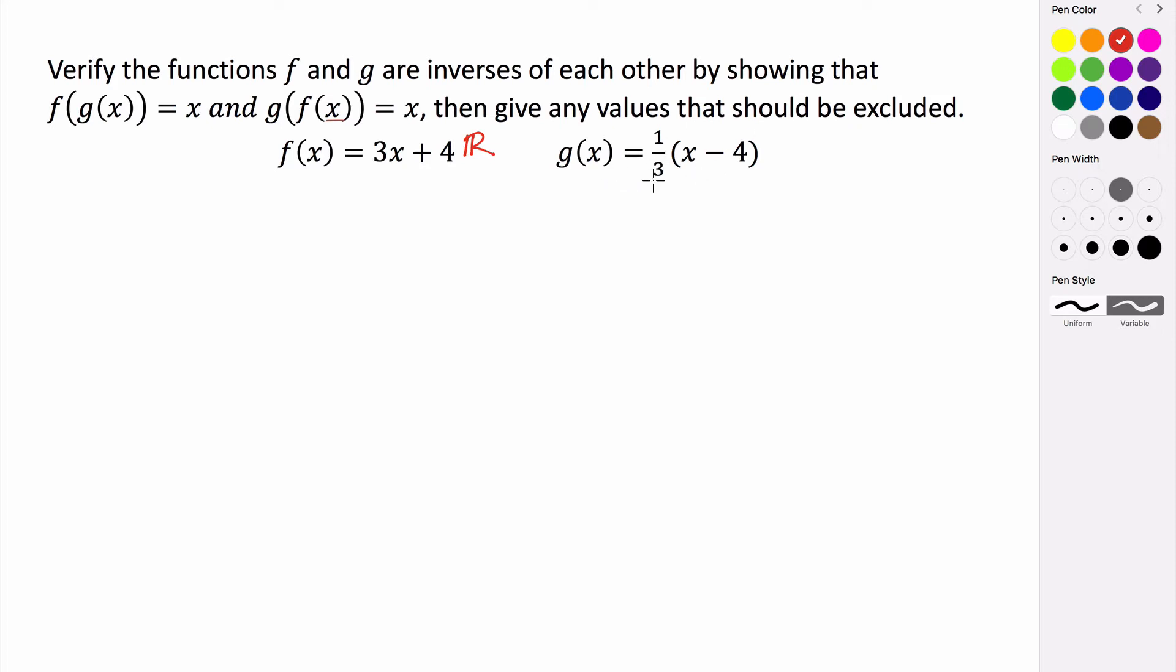G of x is also a line. It's just kind of written in a weird way. Just the one third has not been distributed through. So its domain is also all real numbers, which means neither of these functions have domain restrictions. So their composition will not have domain restrictions either.